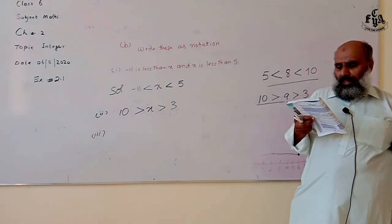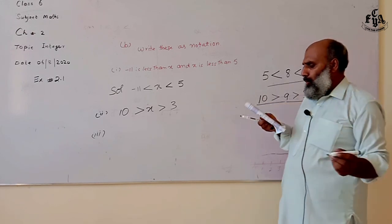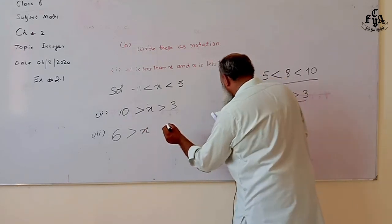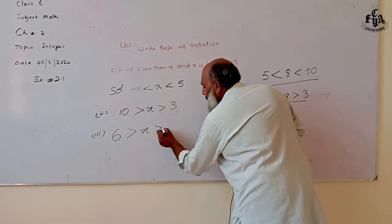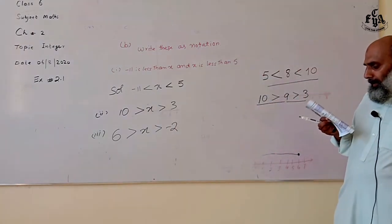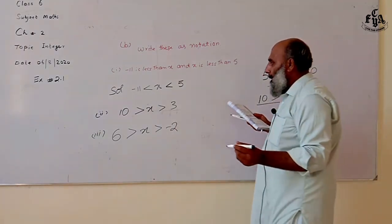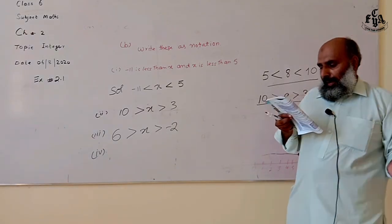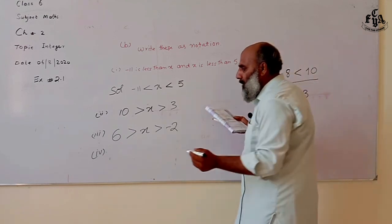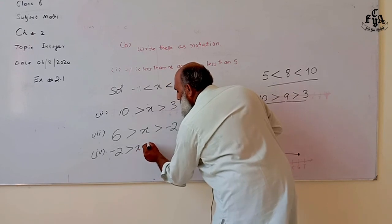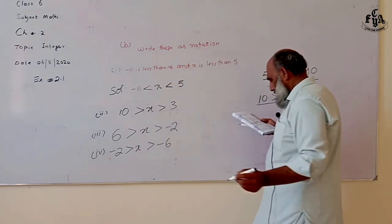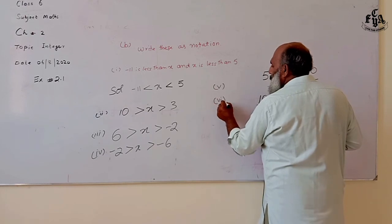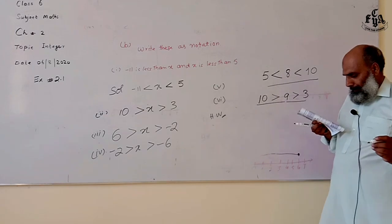Third part: six is greater than x and x is greater than minus two — write this in notation form. Fourth part: minus two is greater than x and x is greater than minus six — write in notation form. The next two questions, part five and part six, are your homework. Try these questions at home.